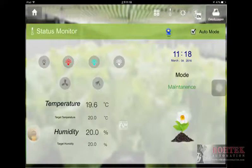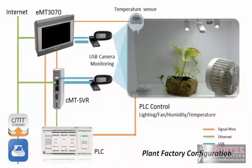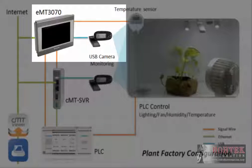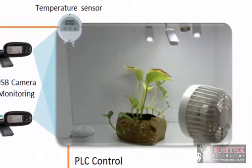In addition to monitoring and logging key environmental data in numeric format, each HMI has a USB camera attached for real-time view of the nursery. The EMT3070 is capable of showing camera feed on its screen, and it is also programmed to capture video snapshots as needed.